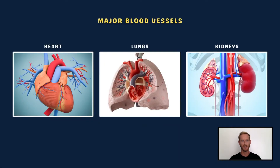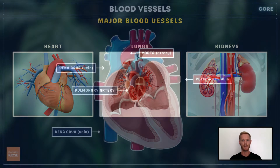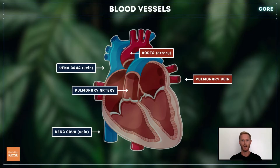You need to identify in diagrams and images the main blood vessels that lead to and from the heart, lungs and kidneys. The main blood vessels of the heart and lungs are the vena cava, pulmonary artery, pulmonary vein and aorta.